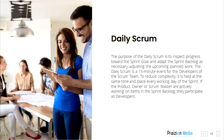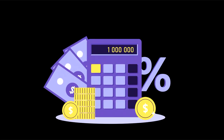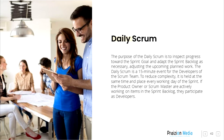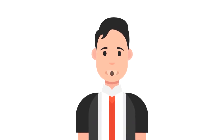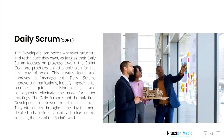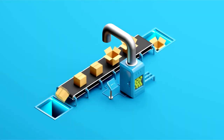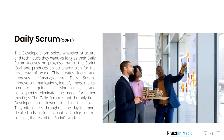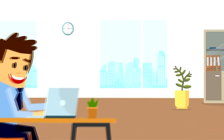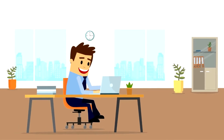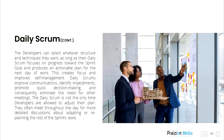The purpose of the Daily Scrum is to inspect progress towards the Sprint Goal and adapt the Sprint Backlog as necessary, adjusting the upcoming planned work. The Daily Scrum is a 15-minute event for the developers of the Scrum Team. To reduce complexity, it is held at the same time and place every working day of the Sprint. If the Product Owner or Scrum Master are actively working on items in the Sprint Backlog, they participate as developers. The developers can select whatever structure and techniques they want, as long as their Daily Scrum focuses on progress towards the Sprint Goal and produces an actionable plan for the next day of work. This creates focus and improves self-management. Daily Scrums improve communications, identify impediments, promote quick decision-making, and consequently eliminate the need for other meetings. The Daily Scrum is not the only time developers are allowed to adjust their plan. They often meet throughout the day for more detailed discussions about adapting or replanning the rest of the Sprint's work.